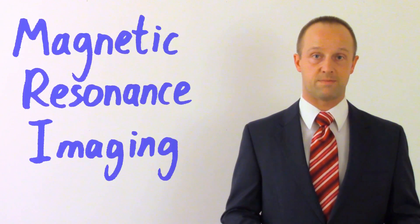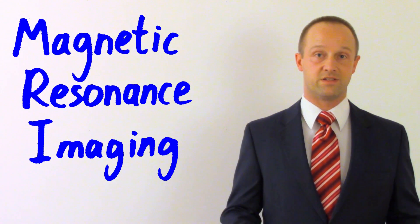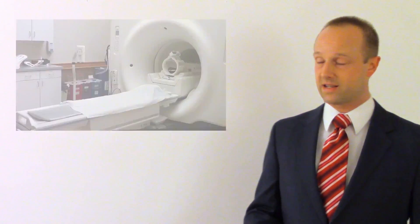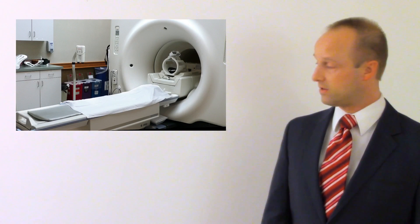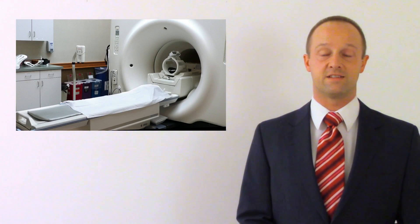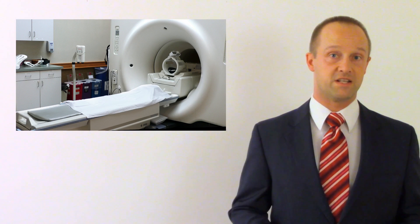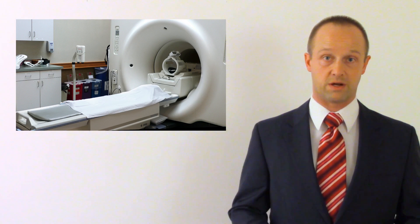AQA and WJEC EDUQAS want you to know about two key ways we can look at what's going on in our brains. The first is MRI scanning — that's magnetic resonance imaging — and this basically uses a very big magnet. An MRI scanner has a bench which people can lie on, and that goes inside a large cylinder containing a very big, very strong, very powerful superconducting magnet.